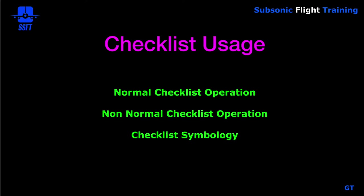There's also a checklist usage section at the back of the QRH. This lists the normal checklist operation — how to run the normal checklist, who reads, and who responds. The non-normal checklist operation section covers the philosophy for carrying out non-normals, in addition to the symbology included within the QRH.